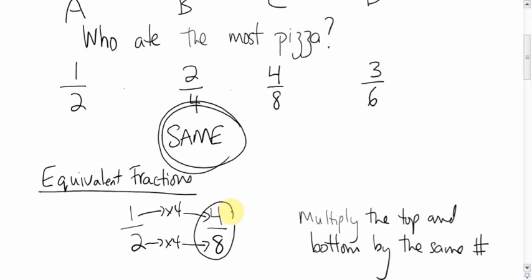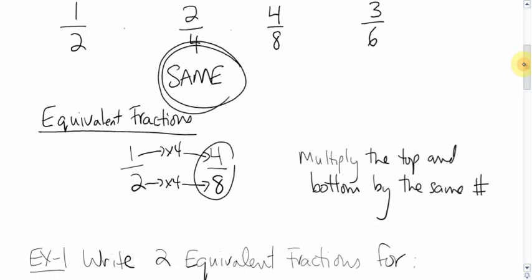That gives me four and that gives me eight. So four eighths is equivalent to one half. And there's a zillion different equivalent fractions to one half. You can make them just by multiplying by a different number. You can do it forever.